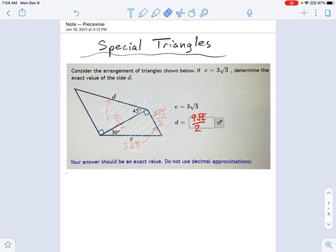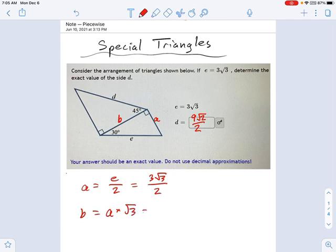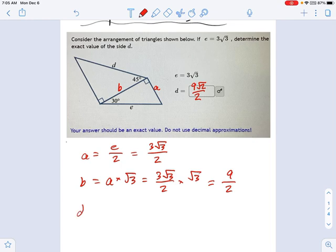So just a quick review of what happens there. Let's put some more labels on these sides. Some people like seeing a whole lot of labels on here. That helps. I can say a equals e over two, so in other words, three radical three over two. I can say b equals a times radical three. So that's three radical three over two times radical three, which gives me nine over two. And then the last step would be saying d equals radical two times b, which is just nine radical two over two.